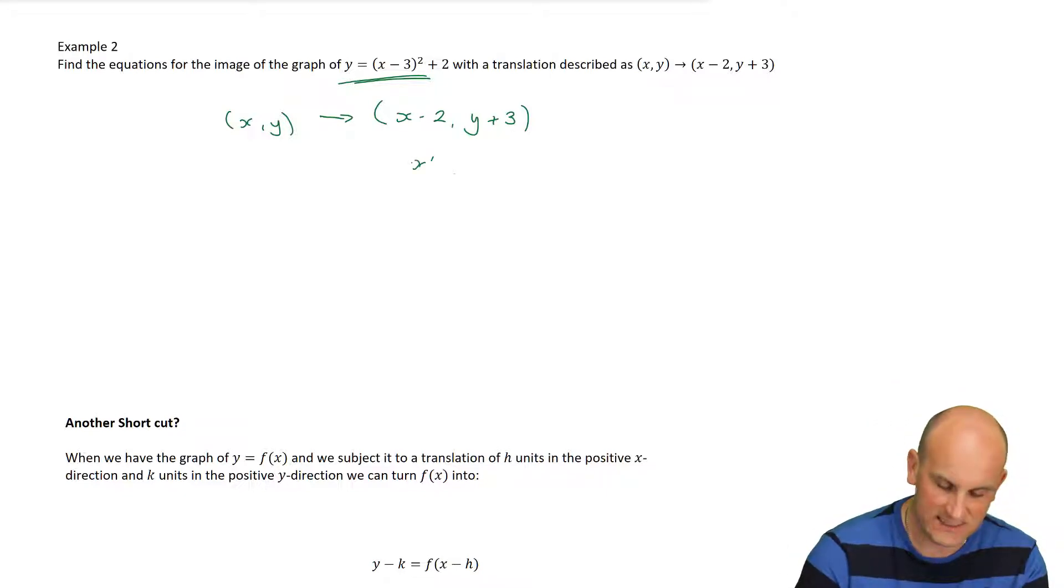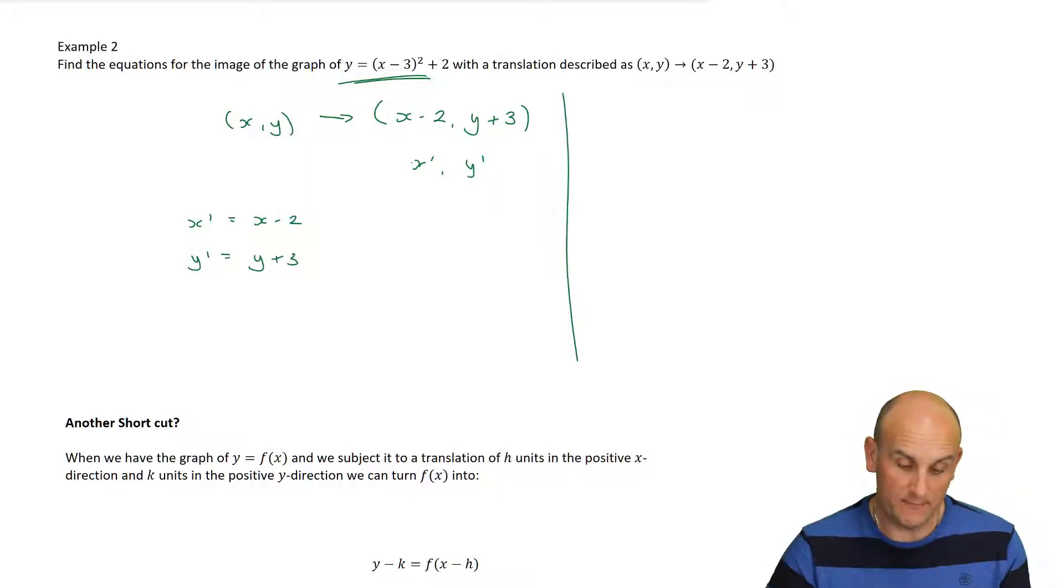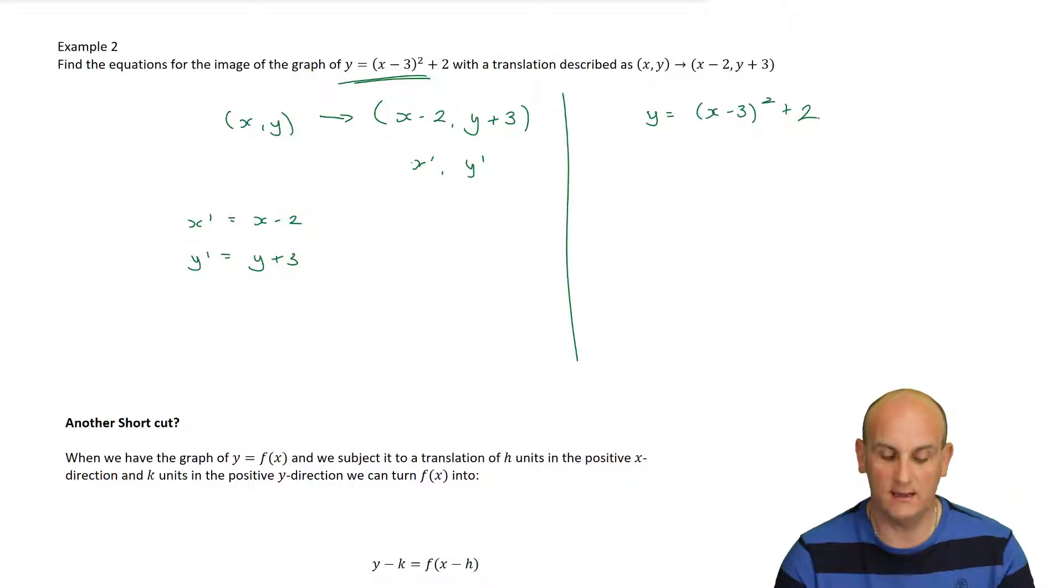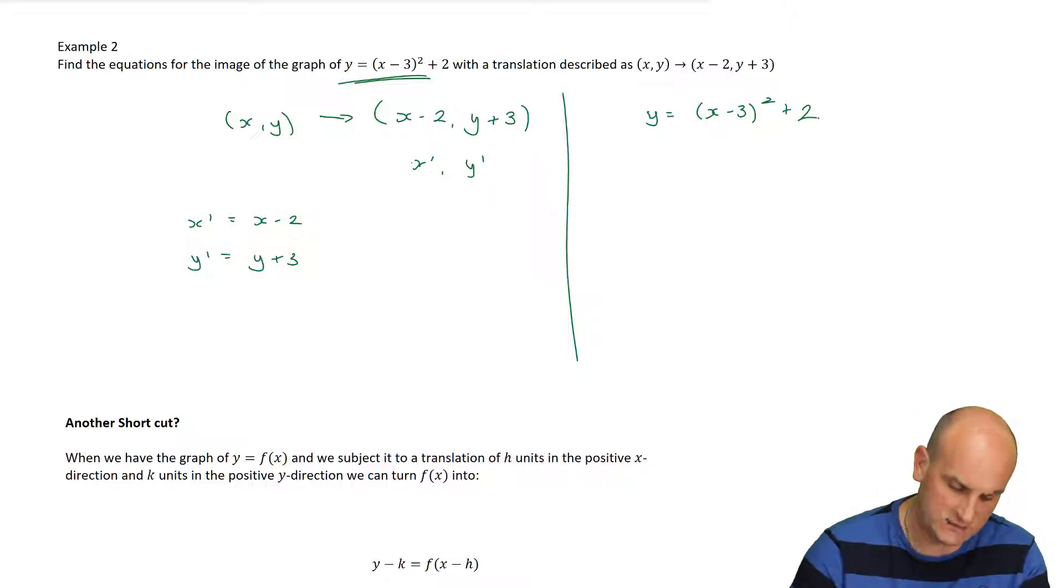But, I've got my transformation there. I've got my algebra, so I'm going to write x dashed and y dashed. I'm going to equate them. So, I know that x dashed is equal to x minus 2. I know that y dashed is equal to y plus 3. And, why do I need to know that? Well, I've got my original equation here of y is equal to x minus 3 or squared plus 2. And, I'm trying to now find a way to substitute out the x and y that I've got for the x dashed and y dashed that I need. And, so, I'm going to rearrange these two equations here to give me the x is equal to x dashed plus 2, and y is equal to y dashed minus 3.